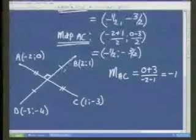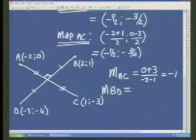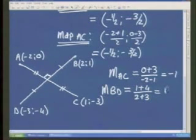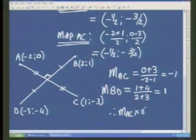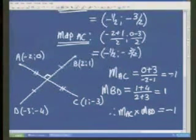Quickly, the gradient of BD — same process. Top y minus bottom y: the double negative becomes positive, so 1 plus 4, over 2 minus minus 3 which is 2 plus 3. That gives 5 over 5, which is 1. And all I need to say is: the gradient of AC multiplied by the gradient of BD is minus 1 times 1, which is indeed negative 1. So the diagonals are perpendicular. Remember — two issues with the diagonals: midpoint E must be shared, and the gradients must be perpendicular to one another.